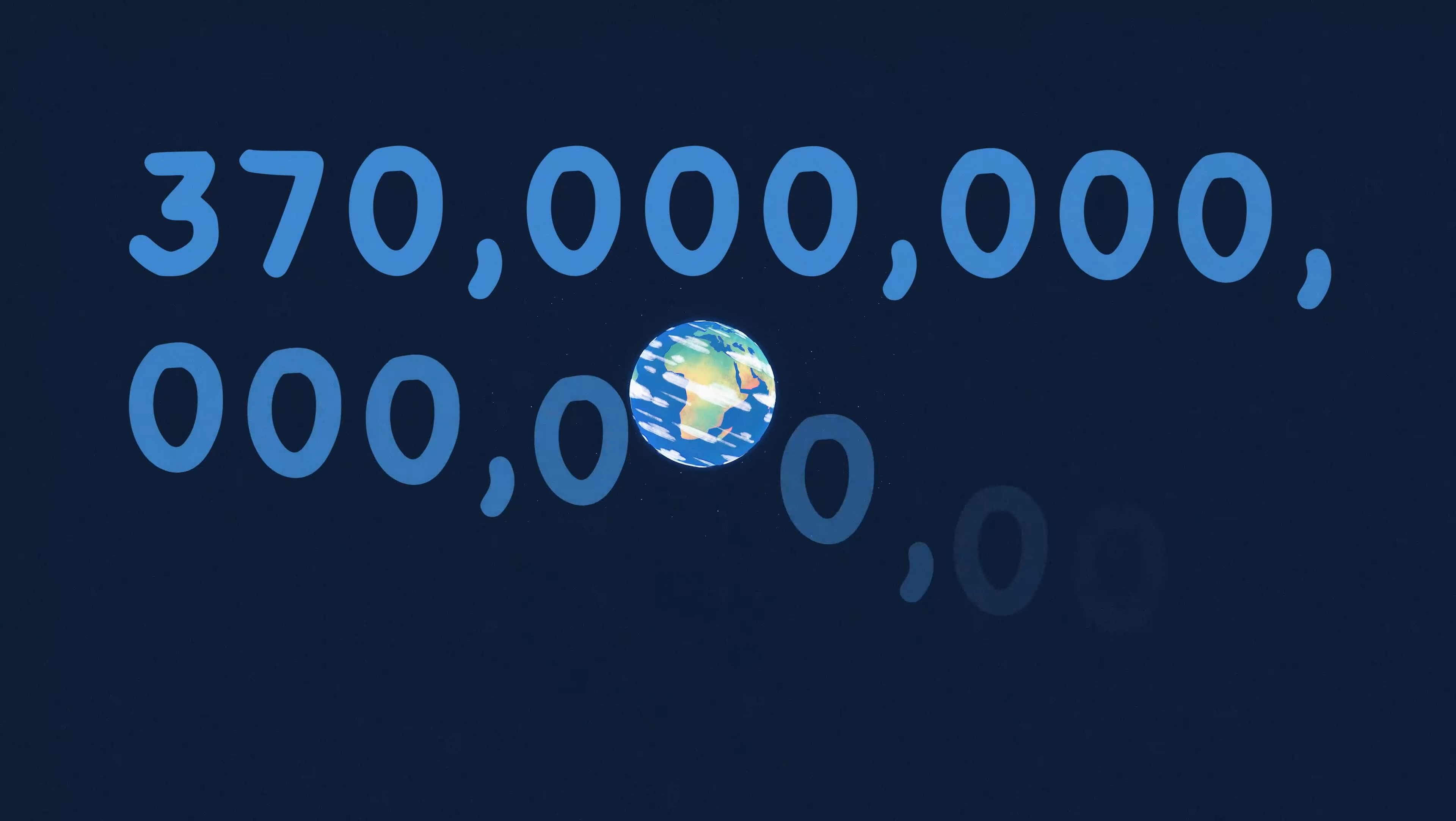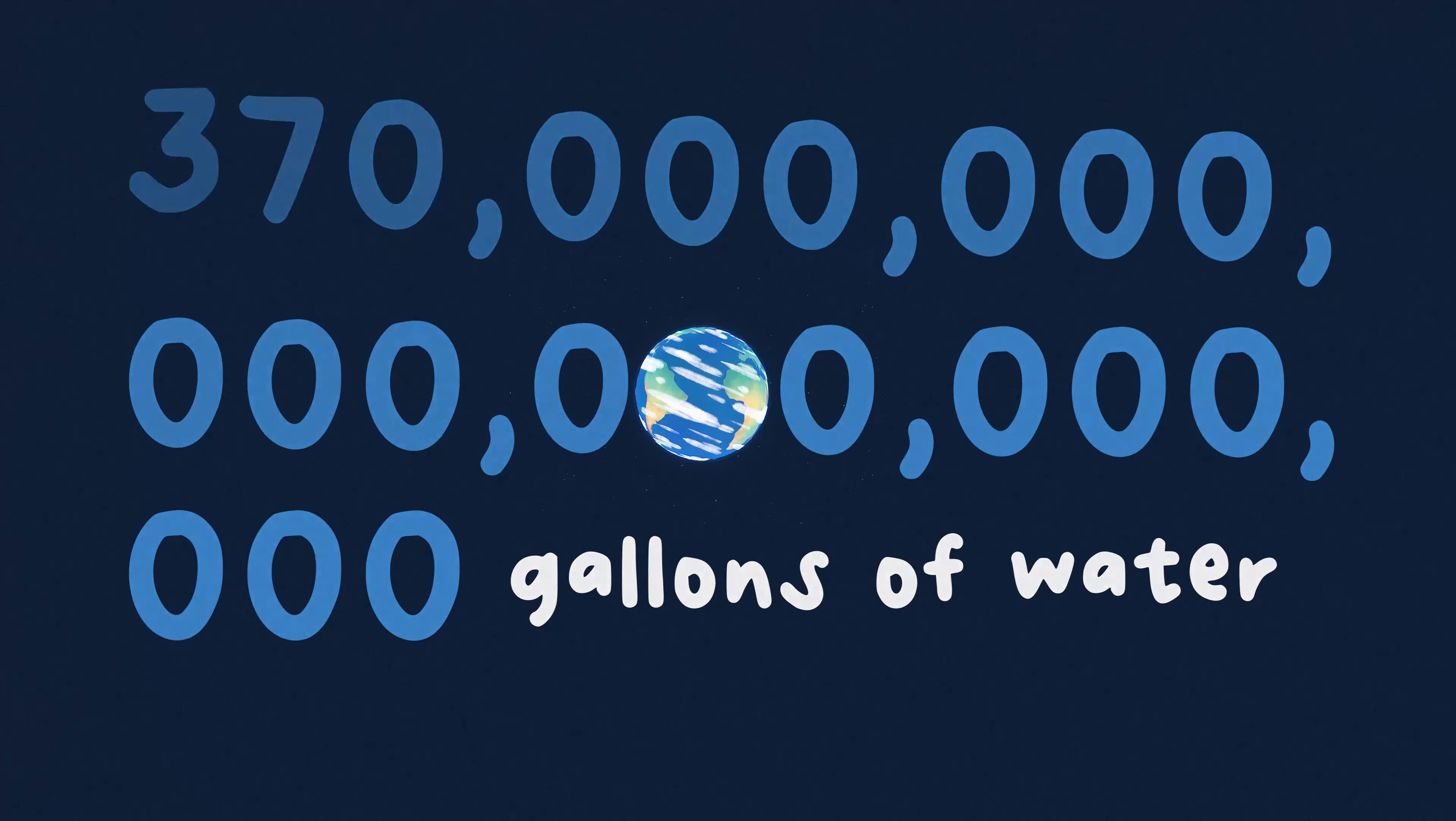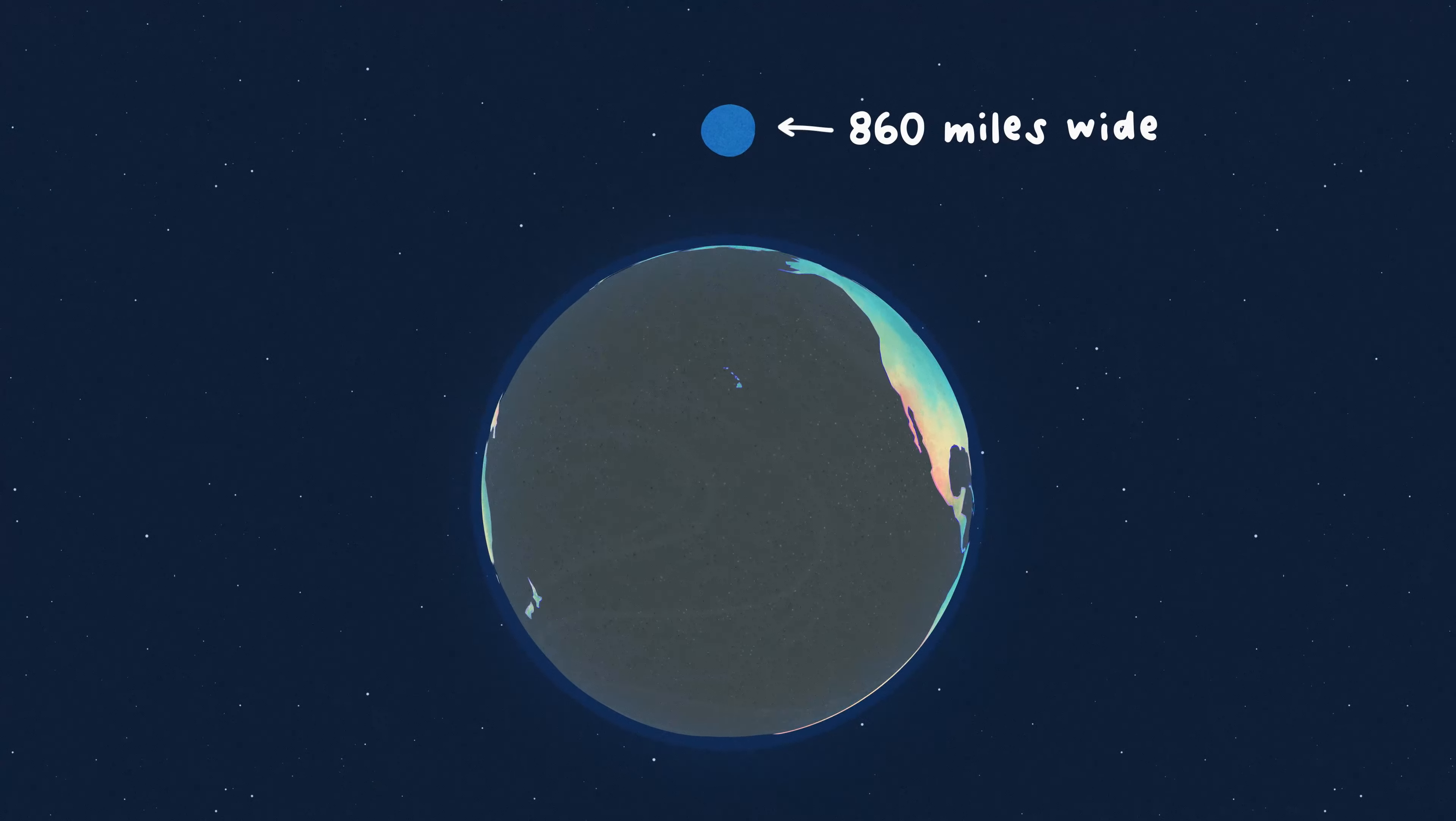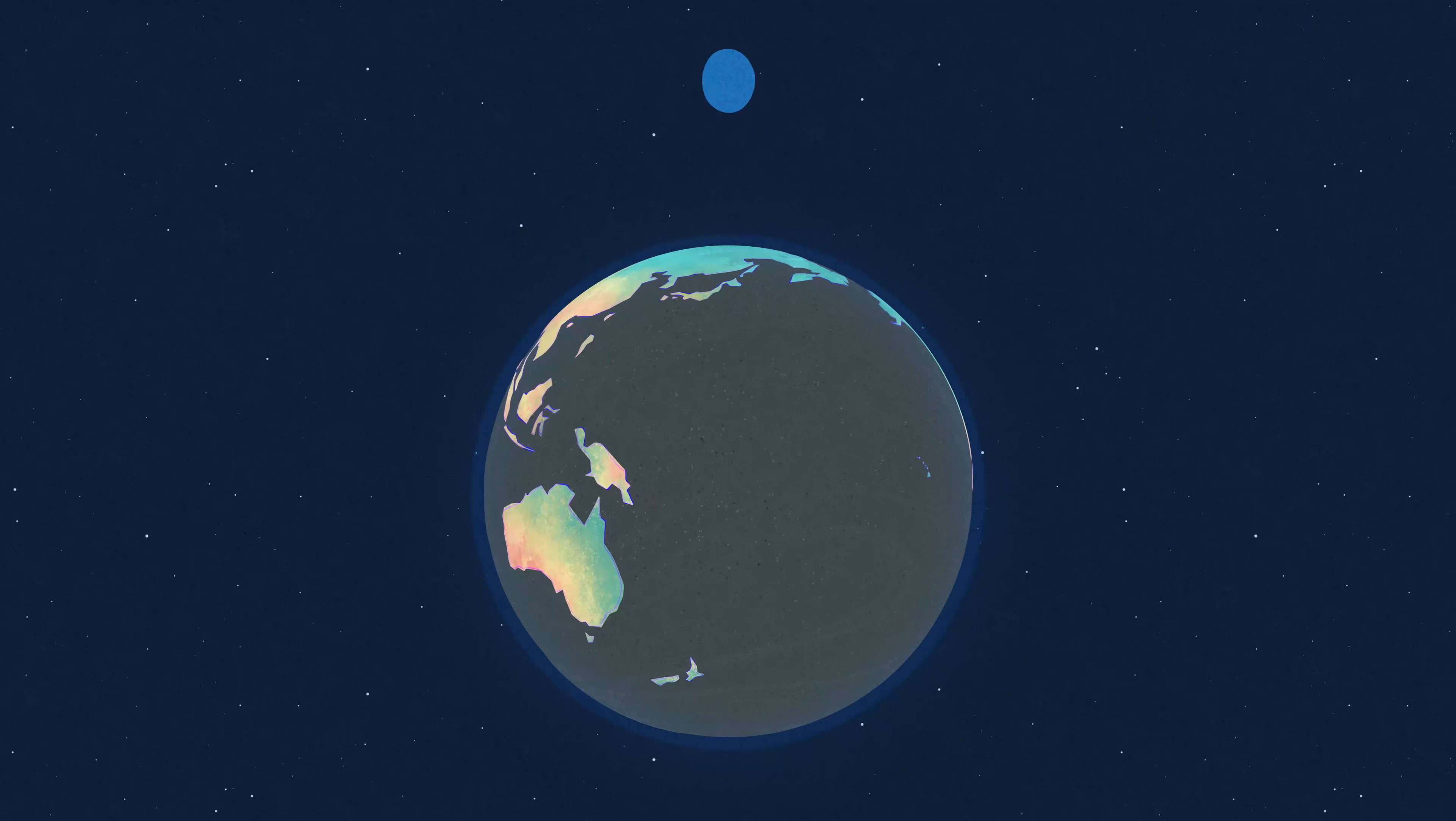Earth has about 370 quintillion gallons of water. If all that water was inside a single drop, it'd be 860 miles wide. Of course, it's not.